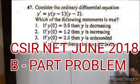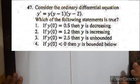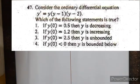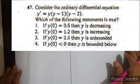The next problem is from ordinary differential equations. Consider the ODE: y' = y(y-1)(y-2). Which of the following statements are true? First, if y(0) = 0.5, then y is decreasing. Second, if y(0) = 1.2, then y is increasing. Third, if y(0) = 2.5, then y is unbounded.